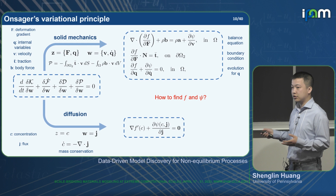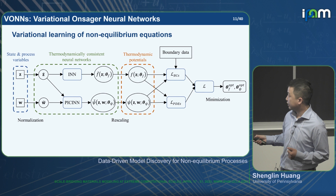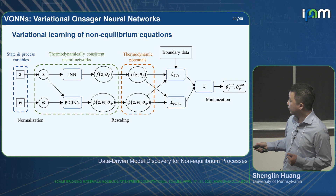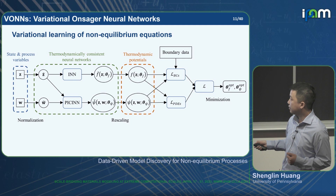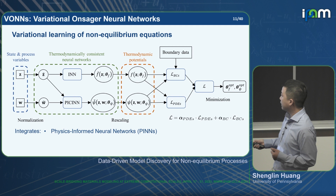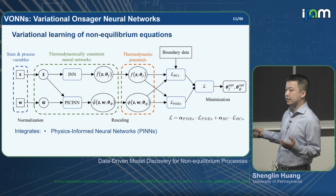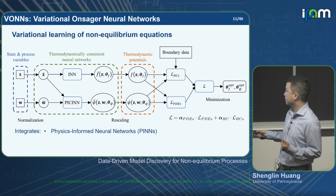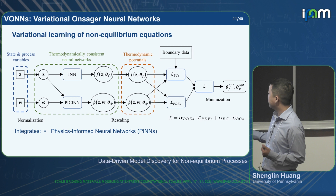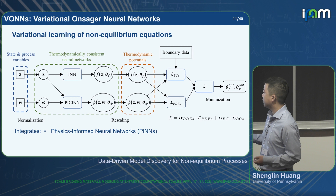To solve this inverse problem, we propose a neural network architecture that uses the state and process variables as input. We use two different neural networks to learn the free energy and dissipation potential respectively. We use a physics-informed approach: we obtain the PDEs and boundary conditions from the variational Onsager principle and construct the loss function based on these PDEs and boundary conditions, then minimize this loss to find the optimal free energy and dissipation potential.